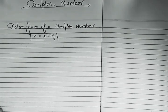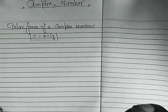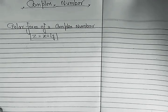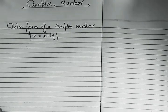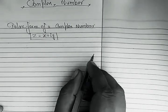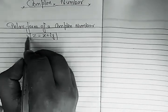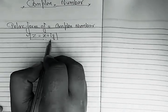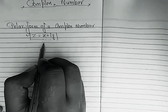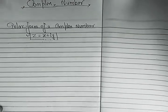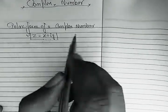Hello students. In today's video we are going to discuss how we can write a complex number in polar form. Suppose a complex number is given in a Cartesian form and we have to convert it into a polar form. A complex number given in the form of x plus iy is called the Cartesian form of a complex number.